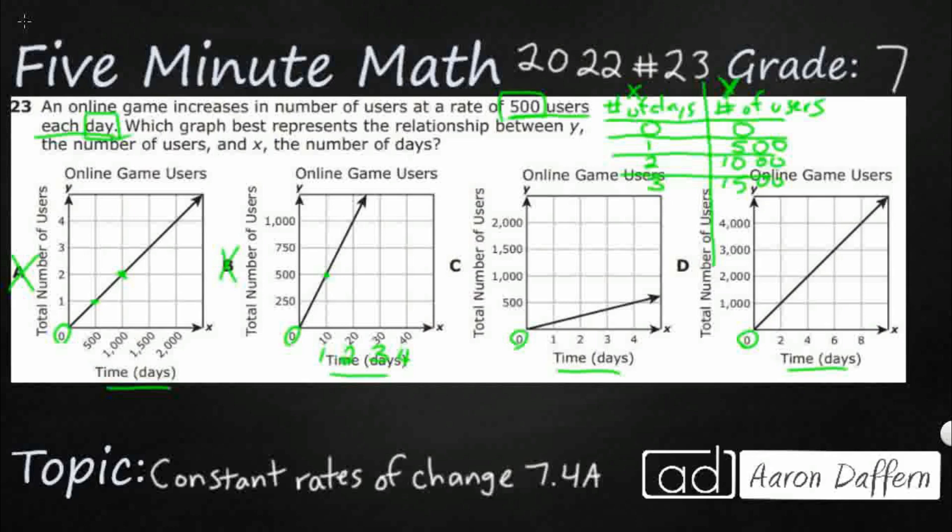Let's check C. Oh my goodness. This is taking us four days to get to 500 users. Well, it says we've got 500 users each one day. So four days for 500 users, not going to work.